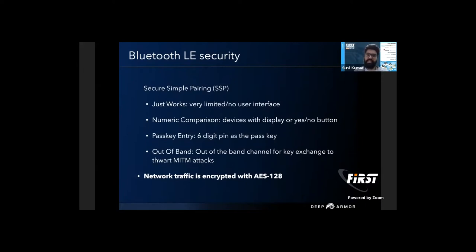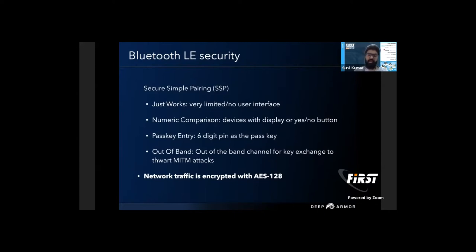The four pairing mechanisms are: first, Just Works — where there is no user interface and no user authentication, the temporary key is all zeros. Second, Numeric Comparison — there will be a button and a display; the user presses yes or no after seeing the PIN on the display. Third, Passkey Entry — where the device has a display and keypad to enter the PIN. Fourth, Out of Band — where user authentication is done through another protocol like NFC or Wi-Fi Direct to exchange the temporary key.